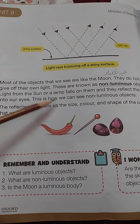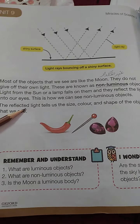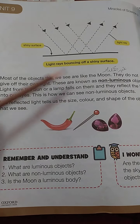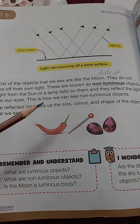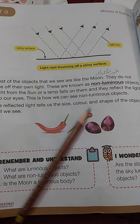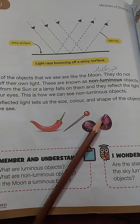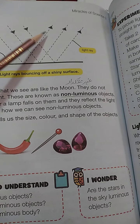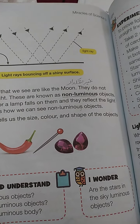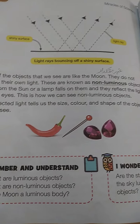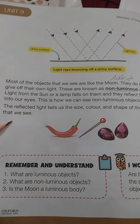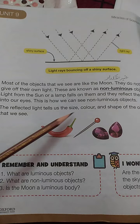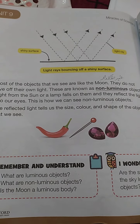So highlight non-luminous — its meaning is gair chamakdar, जिसकी अपनी रोशनी नहीं होती। Light from the sun and a lamp falls on them and they reflect the light to our eyes. ये रोशनी जब इन पر fall करती है तो हमारी आँखوں تک پہنچتی ہے۔ This is how we can see non-luminous things. The reflected light tells us the size, color, and shape of the objects that we see.